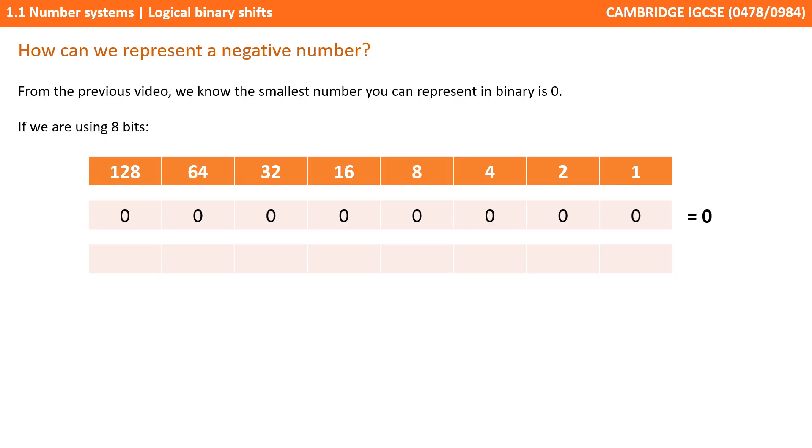We know from our previous video that the smallest number we can represent in binary is 0, and if we were using 8 bits it would simply be a sequence of zeros in every column. We also know that if we add 1's in any column the number becomes positive and increases in value. So even if we put a 1 in the smallest column on the right, we still have a value that's increased from 0.